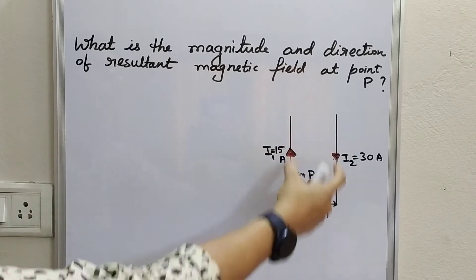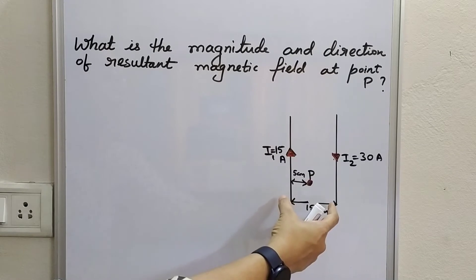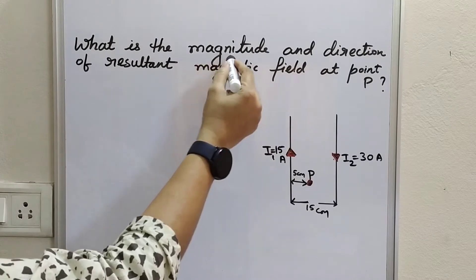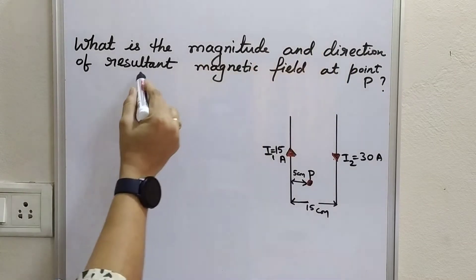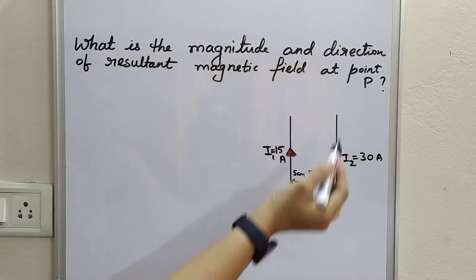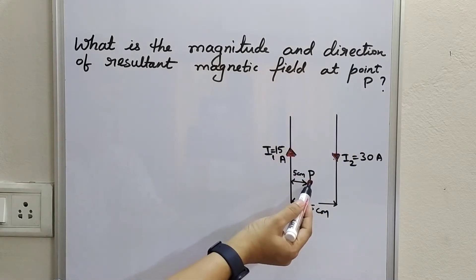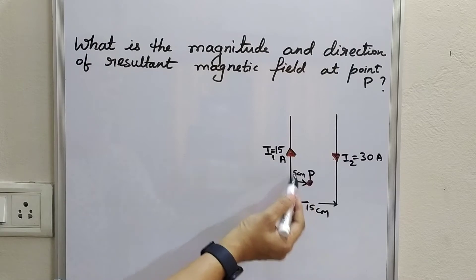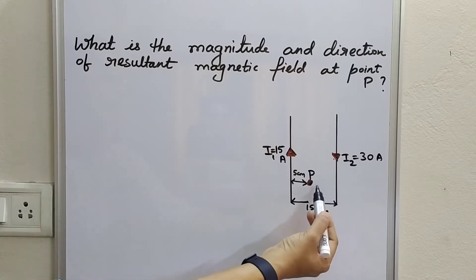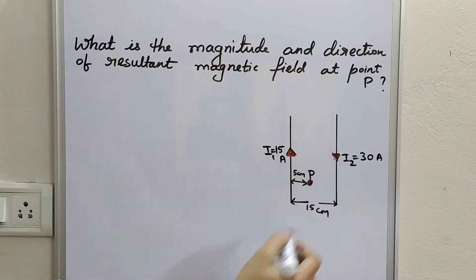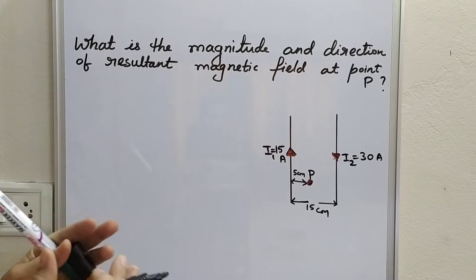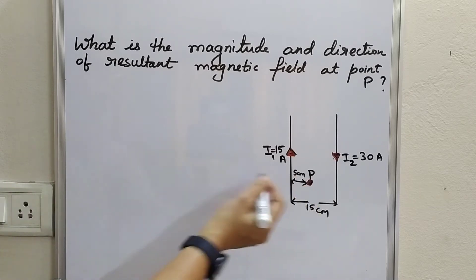The distance between these two parallel long straight conductors is 15 centimeters. We are supposed to find the magnitude and direction of the resultant magnetic field at point P. Point P is at a distance of 5 centimeters from the first conductor, which means it is at a distance of 10 centimeters from the second conductor. We will keep that in mind while writing the equations for magnetic field strength at point P.